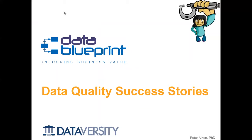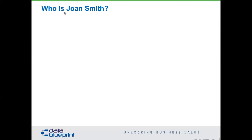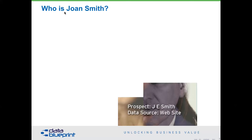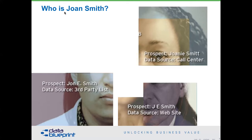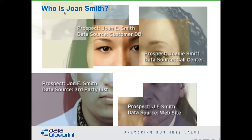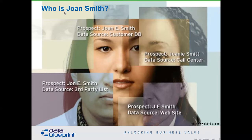About every one in five events, somebody will say you can't justify data quality — and I think that's not correct, you actually can. For example, if your customer data has a prospect coming in through a website as J.E. Smith, and then through the call center they become Joni Smith, or from a third-party banking list they're listed as Joni Smith with a middle initial, and internally the customer DB says Joni Smith — it's all the same person, and we've got to be able to pull all of these things together.